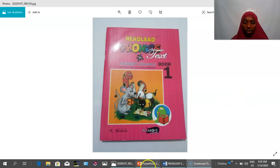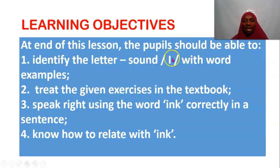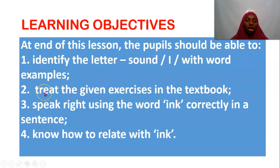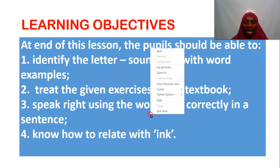The learning objectives of this lesson are: 1. At the end of this lesson, the pupils should be able to identify the letter sound A in the form of capital letter I. They should identify the letter sound A with examples. 2. They should be able to treat the given exercises in the textbook. 3. They should speak right, using the word A correctly in a sentence. And lastly, they should know how to relate with ink — that is the etiquette session of the lesson.